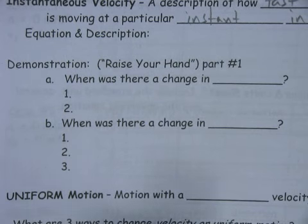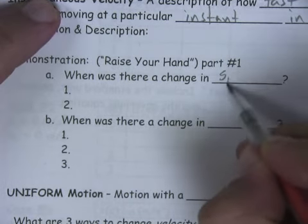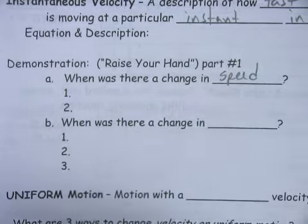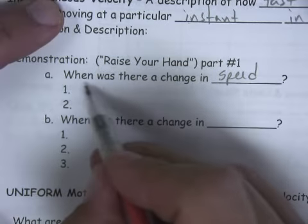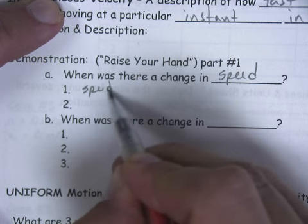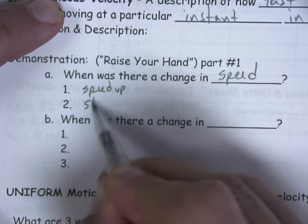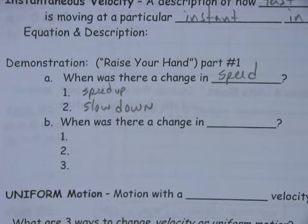Demonstration. In class, I would walk around the room and I would say, okay, I want you to raise your hand when there is a change in speed. So anytime I would change my speed, I would want you to raise your hand. Since I really can't do that on a video here, I'm just going to tell you what we came up with. We would raise your hand when we sped up or when we slowed down. So anytime you change your speed, you're either going to be speeding up or you're going to be slowing down.